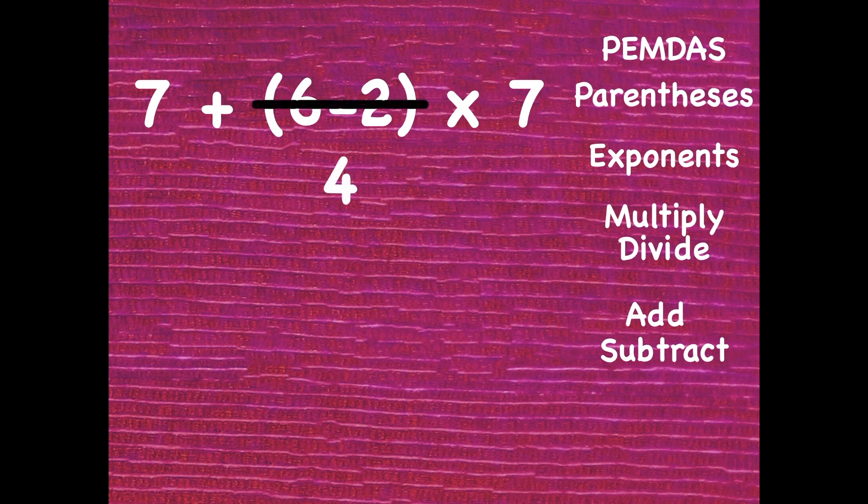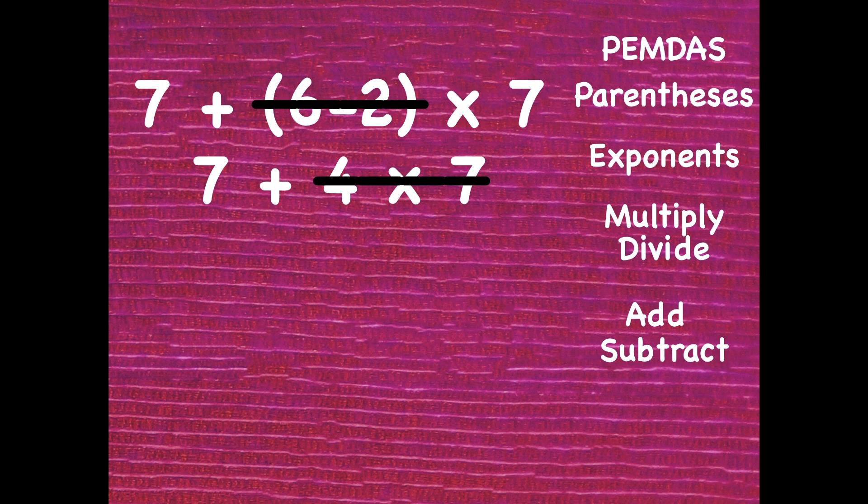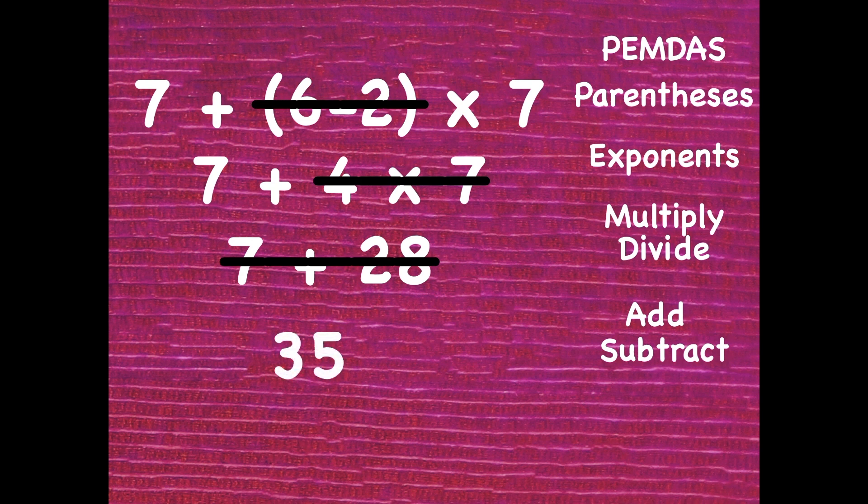Well, if you're here, you must be ready to check your work. Let's go. First, I solved in parenthesis. So that's 4 again. 6 minus 2 is 4. Brought everything else down. So now 7 plus 4 times 7. I'm going to multiply or divide. 4 times 7 is 28. Bring everything else straight down. I don't add or subtract until my final step. Now I have 7 plus 28. 7 plus 28 is 35.